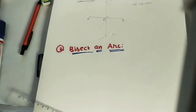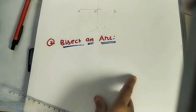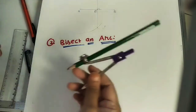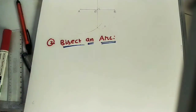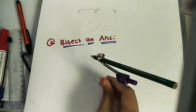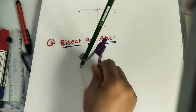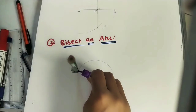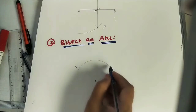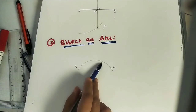Now the next problem: bisecting an arc. An arc has some radius. I am taking the compass, marking a point O. With O as center, take any radius and draw an arc. I am marking two points A and B on the arc surface — this is our arc AB.